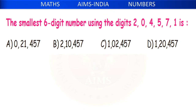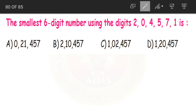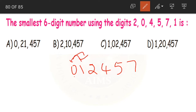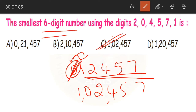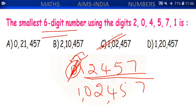Next: the smallest 6-digit number using the digits 2, 0, 4, 5, 7, 1 is dash. Arrange digits in ascending order: 0, 1, 2, 4, 5, 7. But 0 cannot be in the first place, so interchange the first two places: 1, 0, 2, 4, 5, 7. This becomes our smallest 6-digit number — option C, 1,02,457. When 0 is in the start it has no value and becomes a 5-digit number, so we place 0 second.